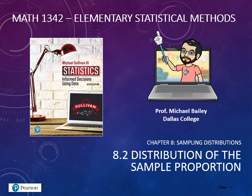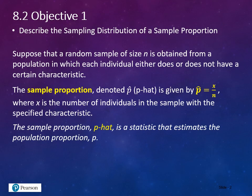Our last lecture for Chapter 8 is 8.2, the distribution of the sample proportion. Chapter 8 is a very short chapter, so let's finish it up. Our first objective is to describe the sampling distribution of a sample proportion.